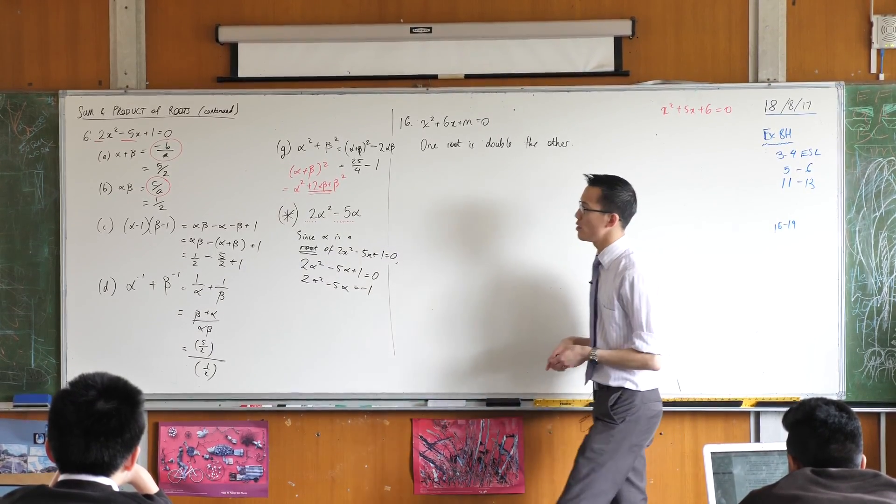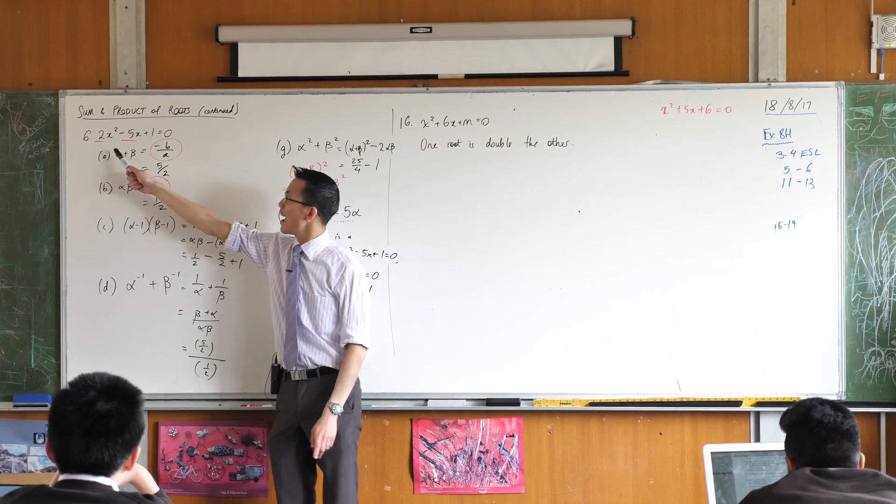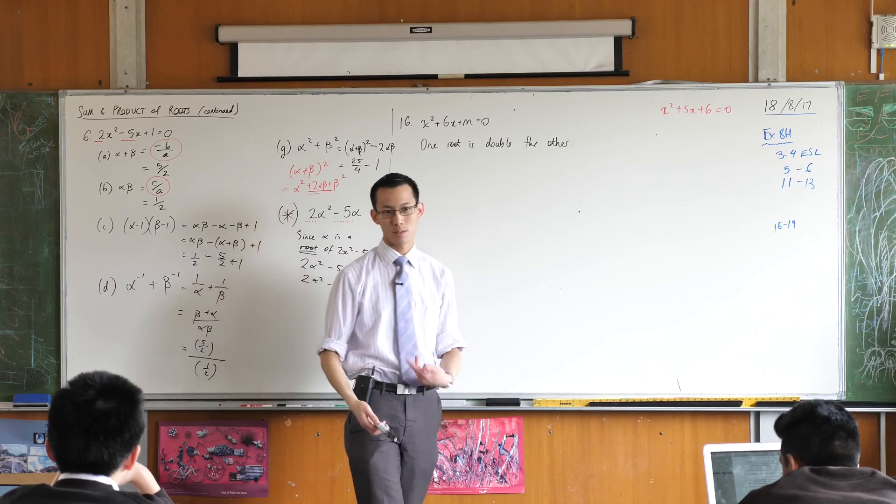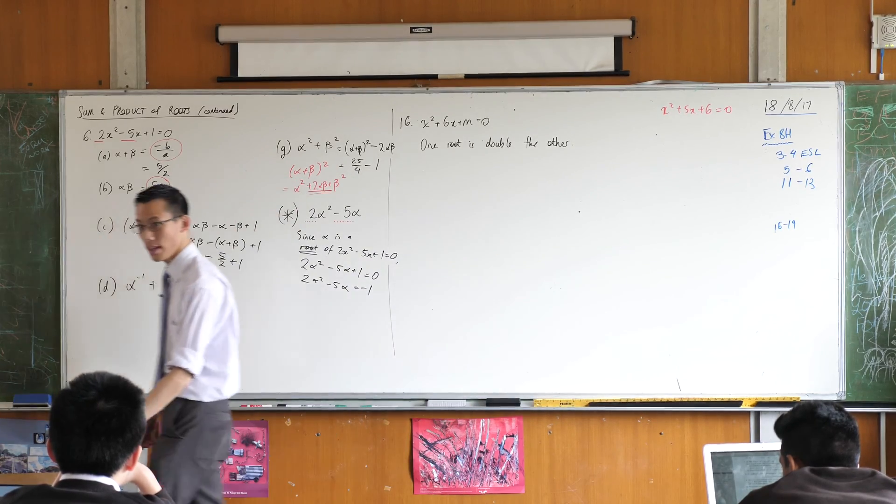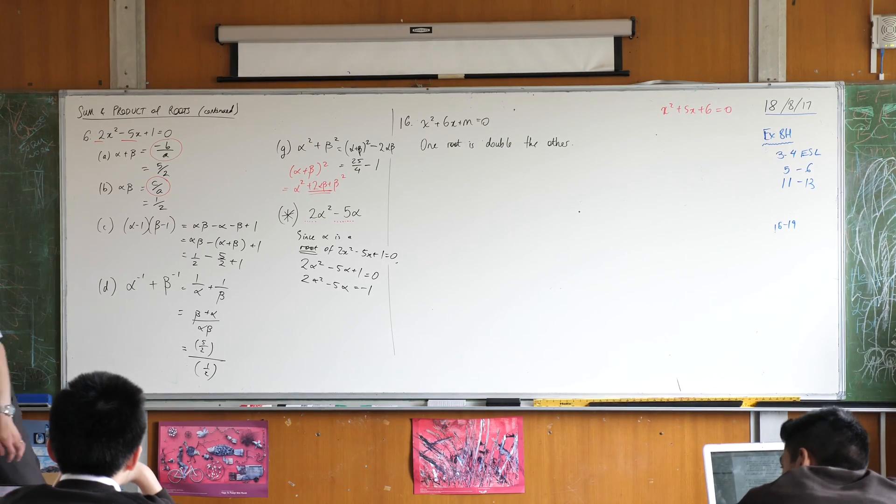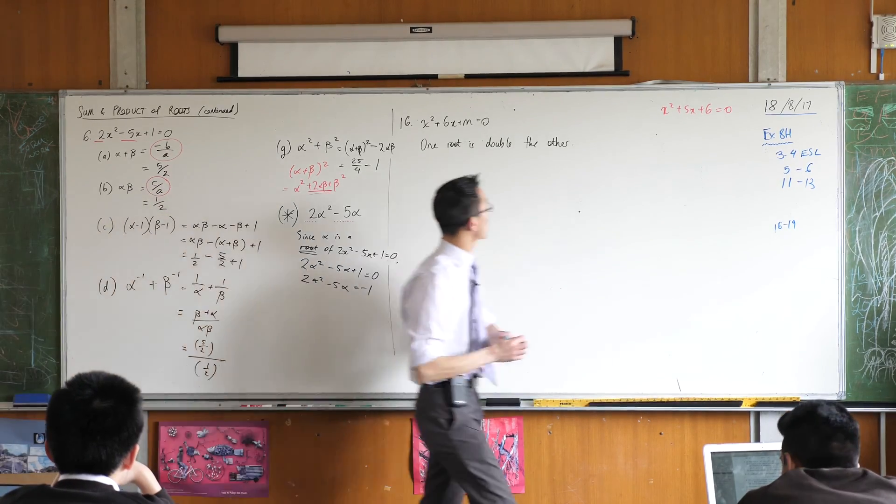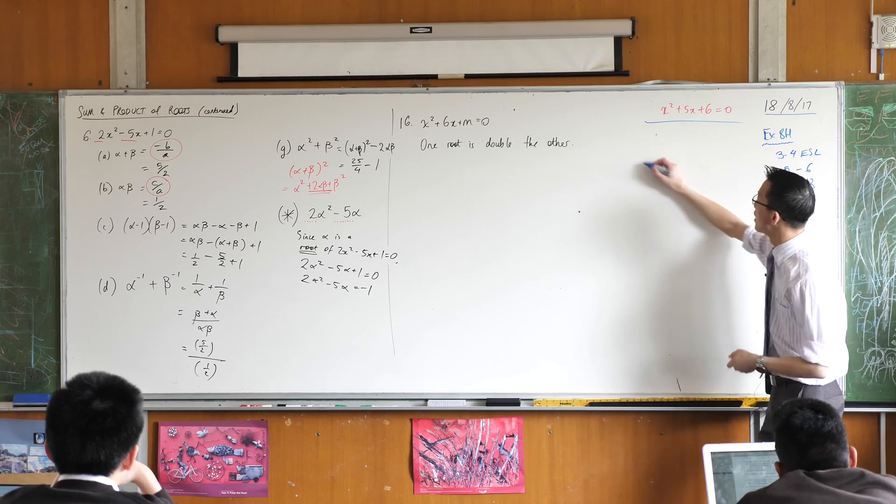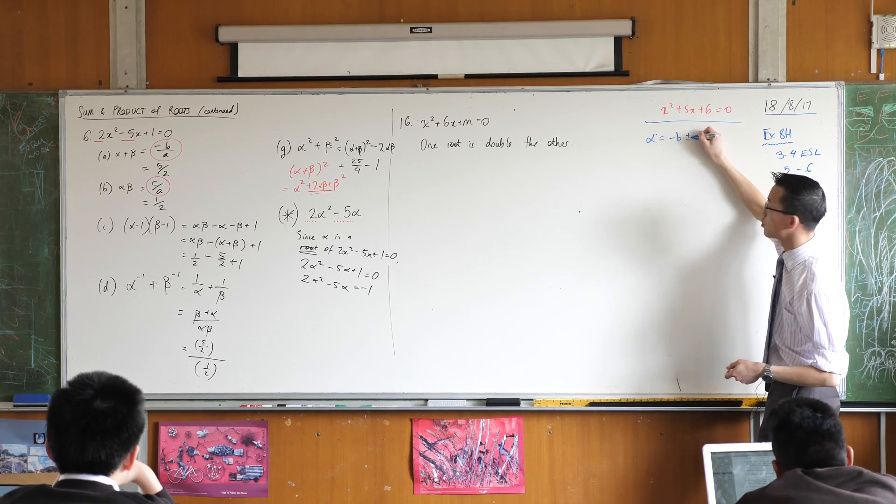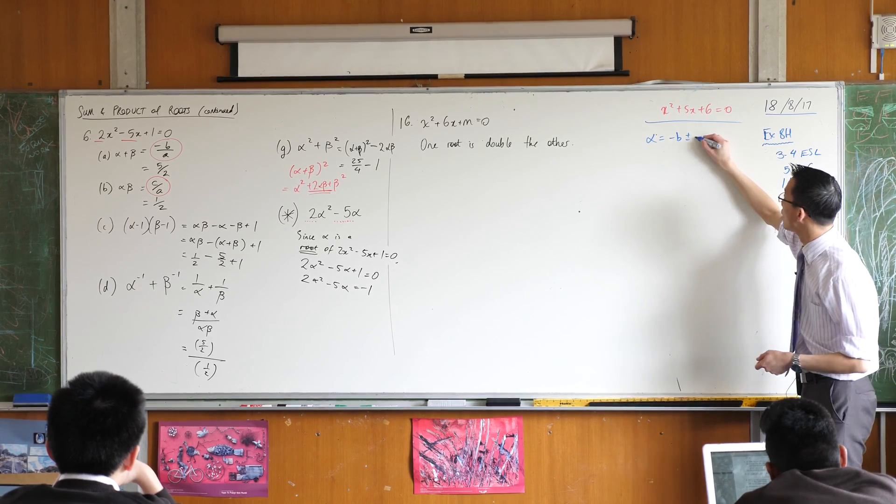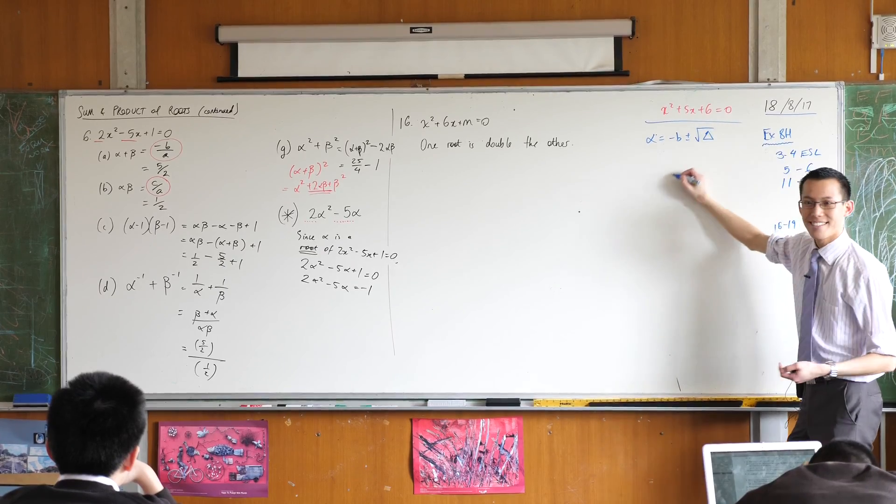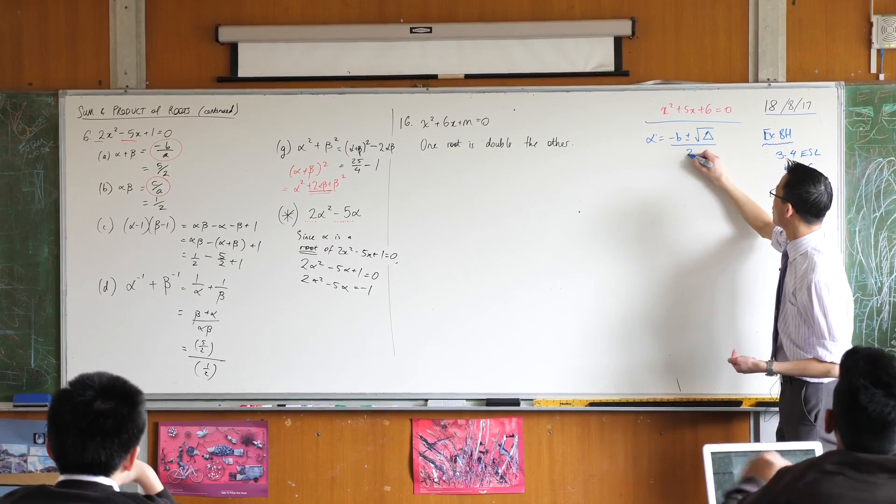But there are other ways to do this because we actually know for any quadratic what the two roots are. We have a whole formula for this. It's called the quadratic formula. Now if the quadratic formula gives us the roots, then one of the roots should be minus B plus or minus square root of the discriminant, all over 2A.